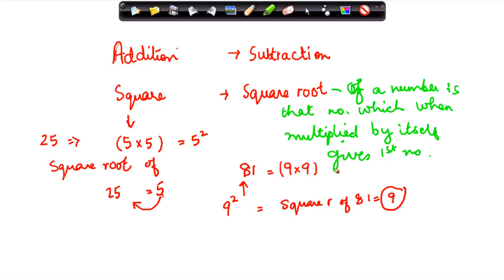Now one important thing that needs to be noted here is that while 81 can be written as 9 times 9, 81 can also be written as minus 9 into minus 9. Why? Because we saw in the property of multiplication that minus into minus will give you plus, and 9 times 9 gives you 81.